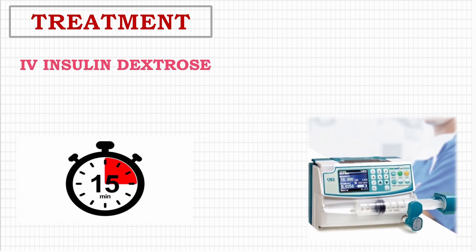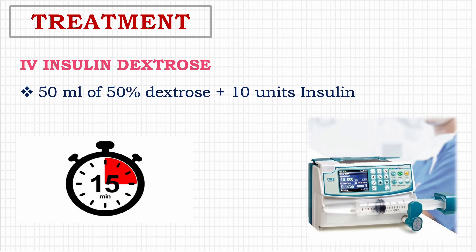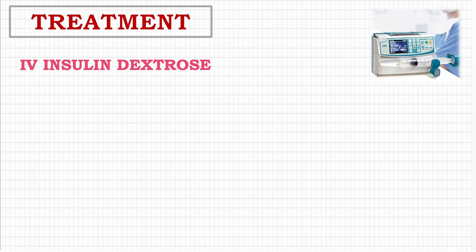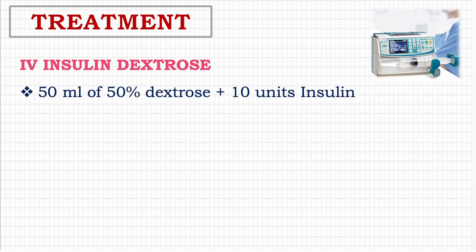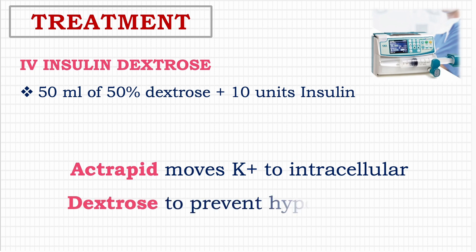The next treatment option is 10 units of insulin with 50% dextrose in a 50 ml syringe, infused over 15 to 20 minutes. Insulin shifts potassium ions from extracellular to intracellular space and reduces serum potassium. Insulin is administered with dextrose to prevent hypoglycemia. If necessary, an infusion of 10% dextrose should be started. IV insulin-dextrose should bring down serum potassium by approximately 1 millimole, with effect lasting three to six hours. The dose can be repeated but should not delay definitive management.